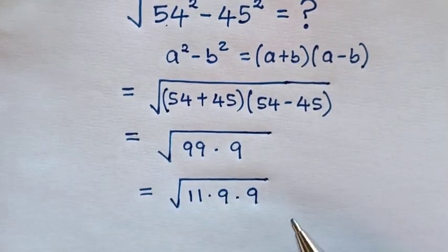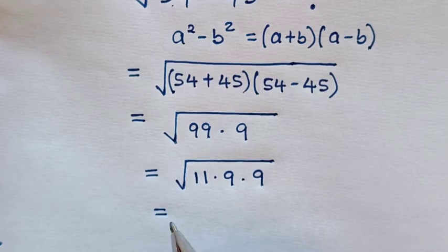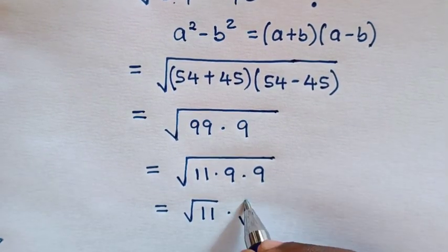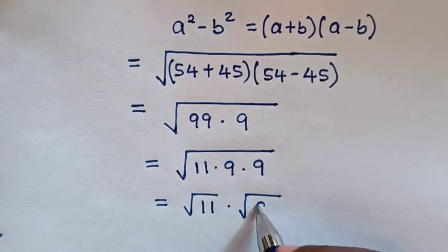Then times this 9. This will equal square root of 11 times square root of 9 times 9, which is 9 squared.